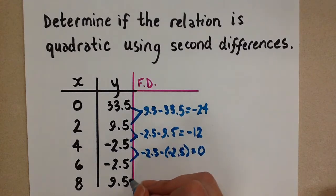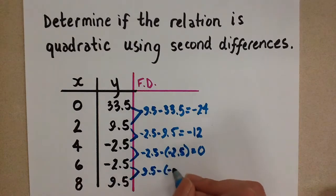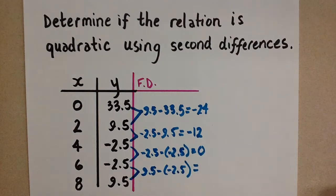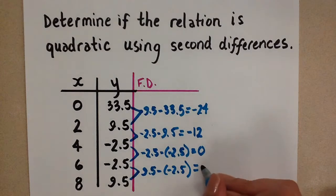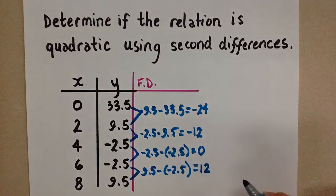And then finally, 9.5 minus negative 2.5. Make sure that you're accounting for that double negative, so be careful with that. And so here we get positive 12.